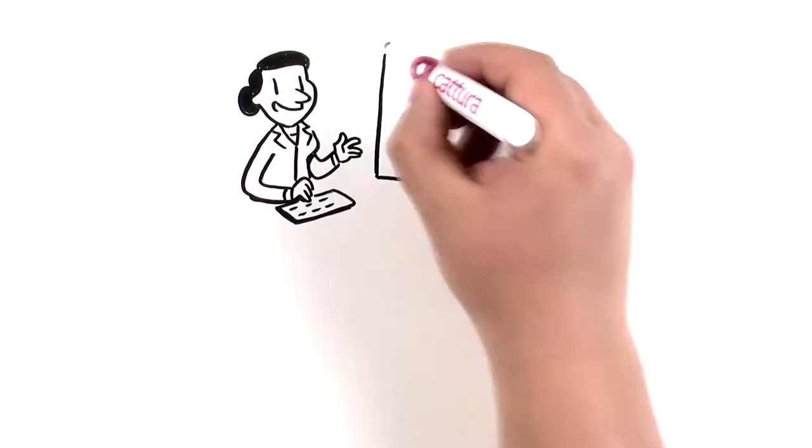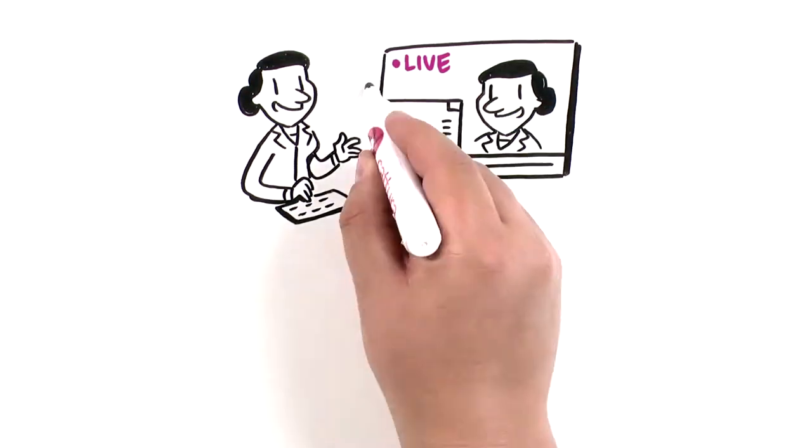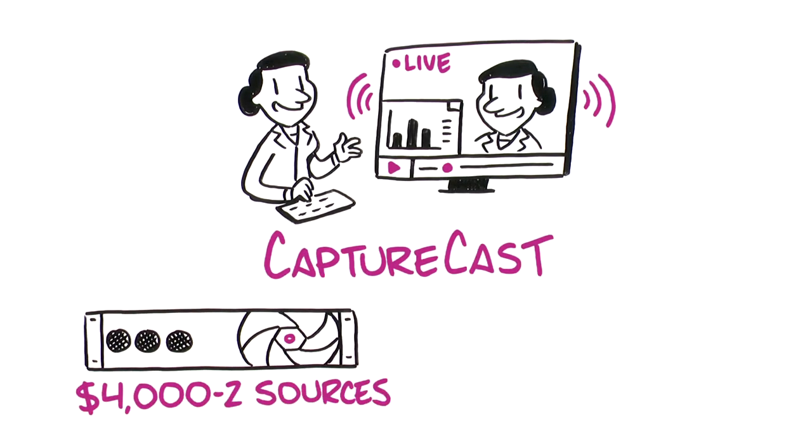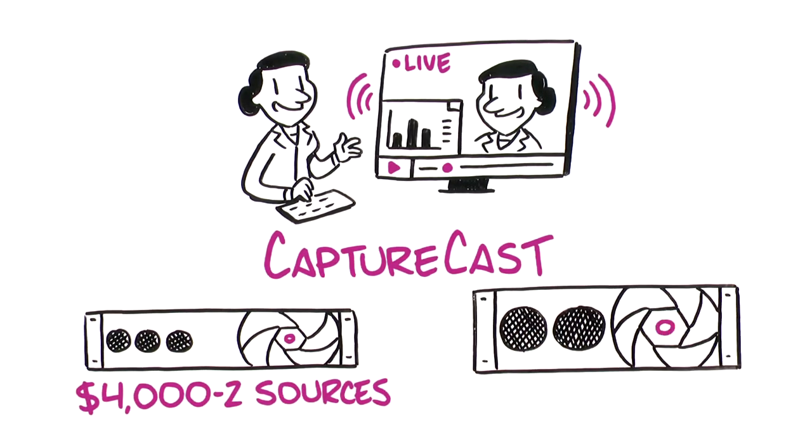Record and stream with confidence. Get everything you need in one place with CaptureCast. Units start at $4,000 for two sources and $6,000 for four sources.